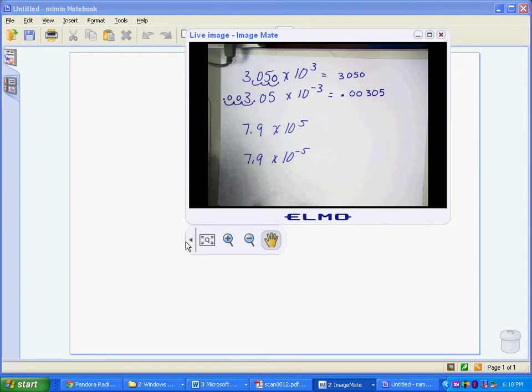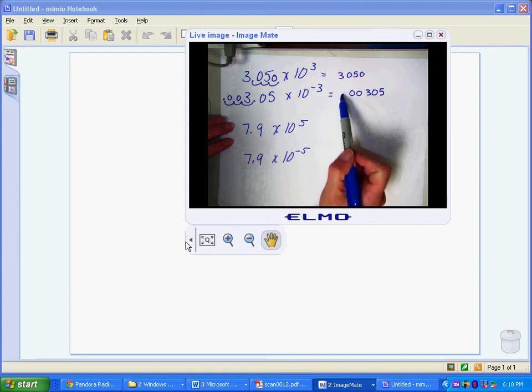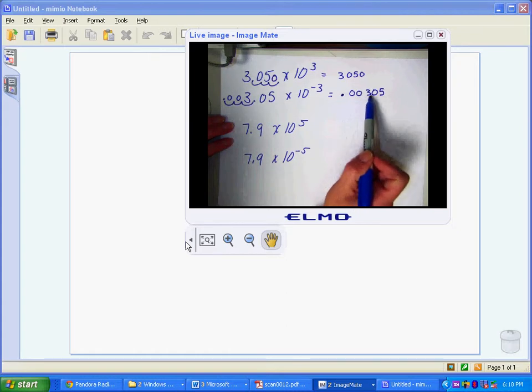I can just double check myself since this is a negative number smaller than 1, I have a negative exponent. To put it back into scientific notation, I would have to move it over 1, 2, 3. So I can check to make sure I did it correctly.